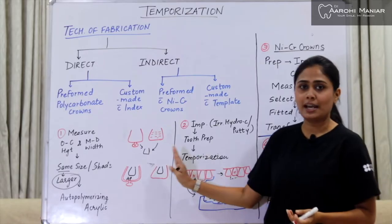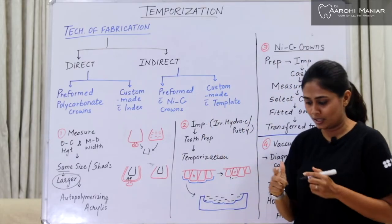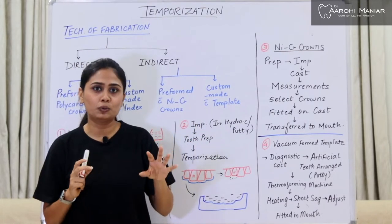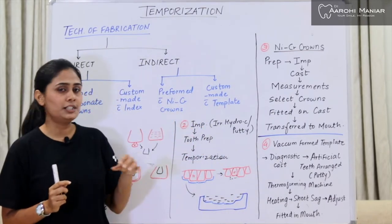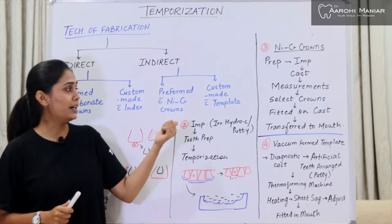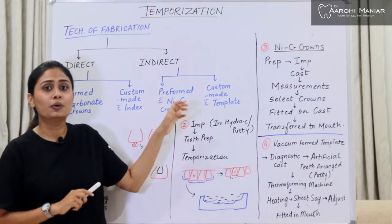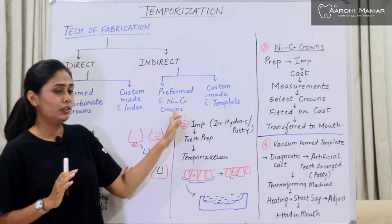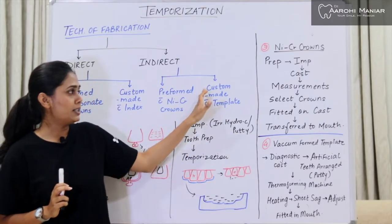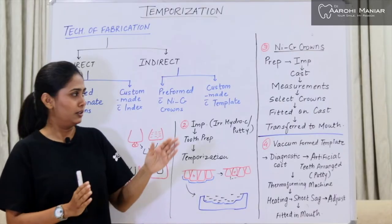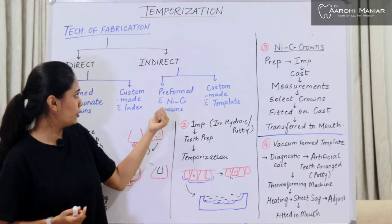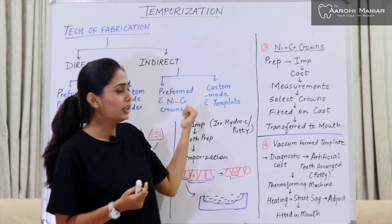Those are the two direct methods for temporization. Moving on to indirect methods — we again have two methods. The first is preformed nickel-chromium crowns, as opposed to the polycarbonate crowns used in direct methods. In indirect methods, everything happens outside the patient's mouth. The second indirect method is with a custom made template. Custom made is very specific to each patient, whereas preformed is a more generalized option.